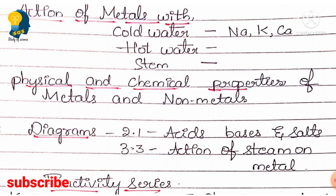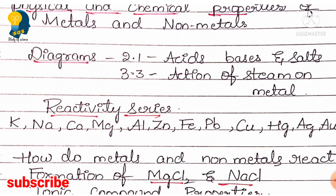You must know the physical and chemical properties of metals. Physical properties include being malleable, lustrous, and sonorous. They can ask skill-based or understanding-level questions — for example, 'The bells used in temples are made of metals — why? Because they produce sound.' This property is called sonorosity. Such 'give a reason' questions will be asked. Also learn diagrams 3.3 (action of steam on metal), which is very important from this lesson.